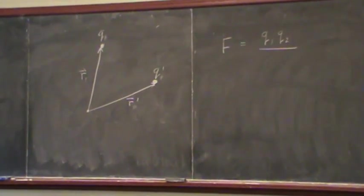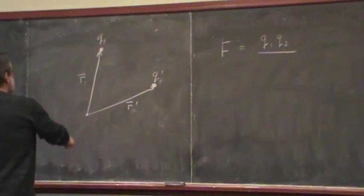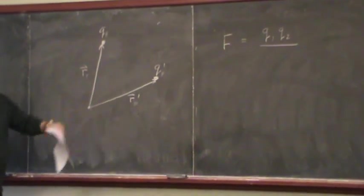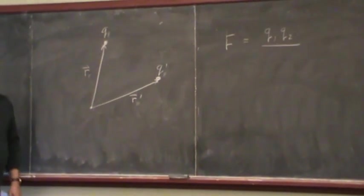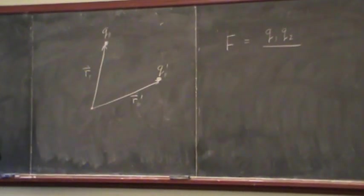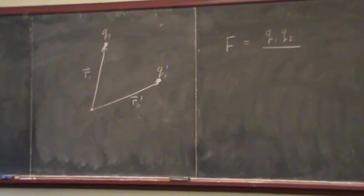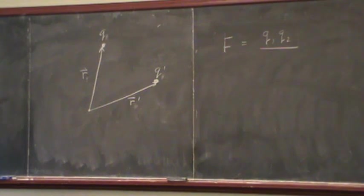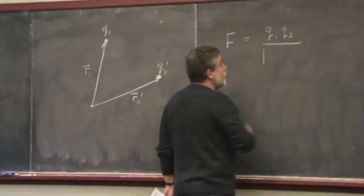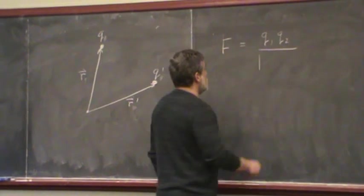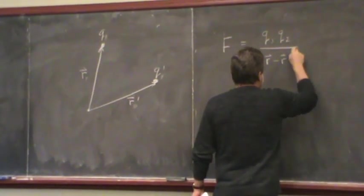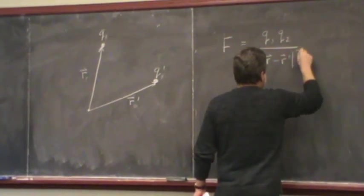I've got charge q at distance r from the origin, and charge q prime at distance and direction vector r prime from the origin. What's going to go in here to get the magnitude is r minus r prime, squared.